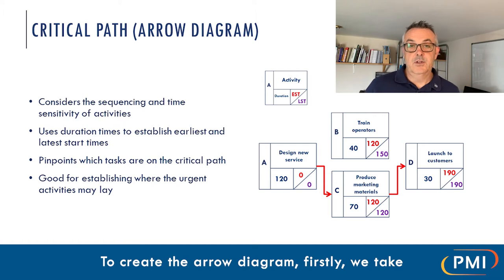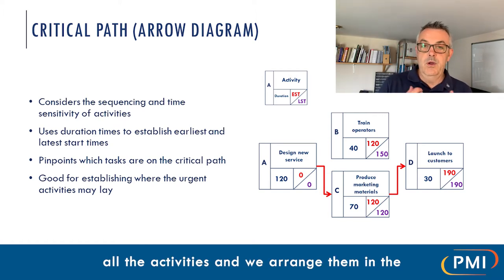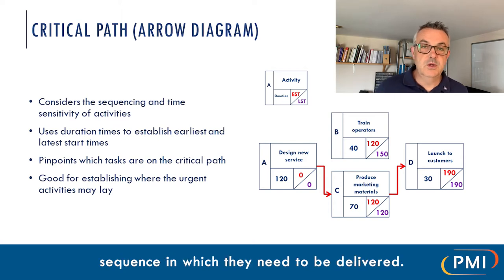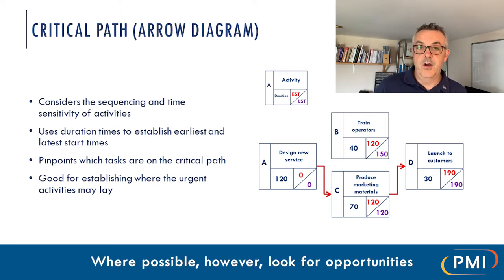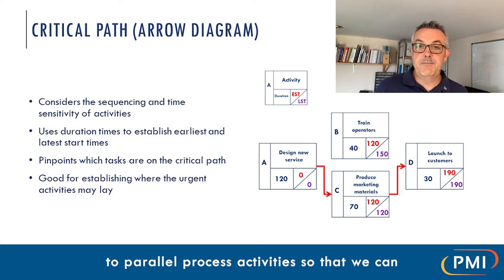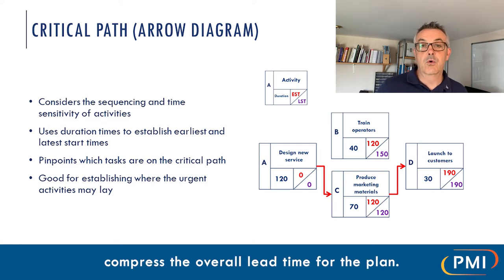To create the Arrow diagram, first we take all the activities and arrange them in the sequence in which they need to be delivered. Where possible, however, look for opportunities to parallel process activities so that we can compress the overall lead time for the plan.